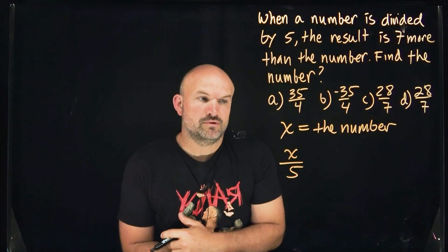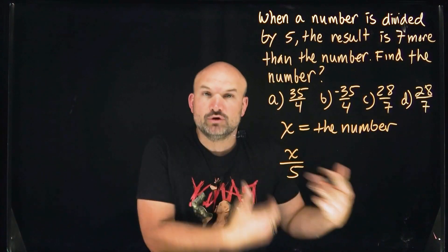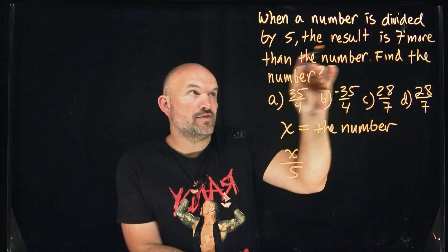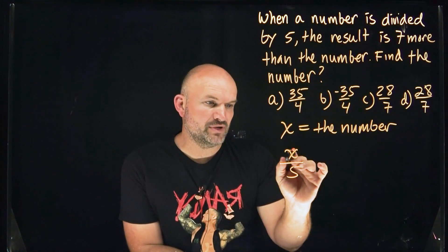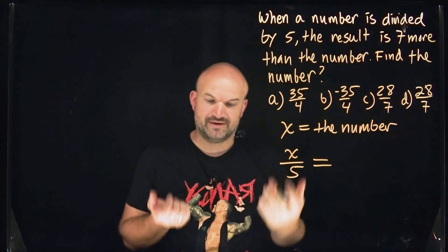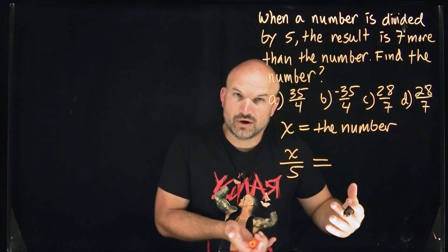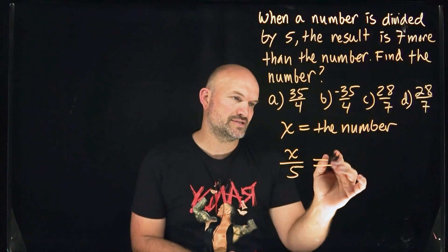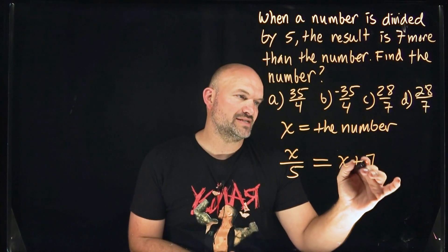It says the result. So what that means is that is equal to. So when it says the result, a number divided by five is going to be equal to seven more than the number. So if we have the number and we have seven more, then we're just going to be adding seven to it. So we can say x/5 = x + 7.